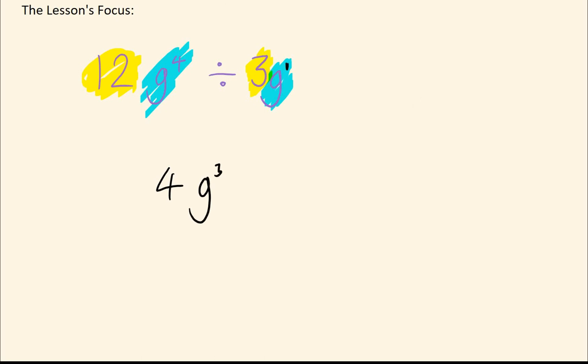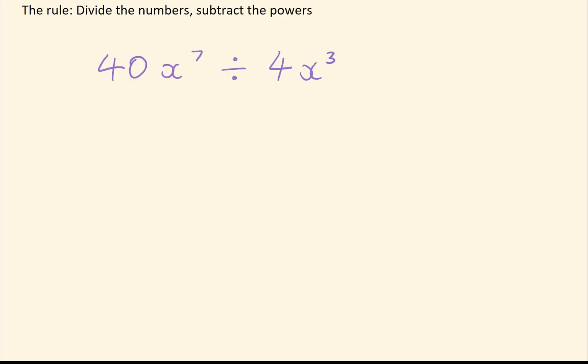So from that, you can see the key rule for division. You want to divide the numbers, and then subtract the powers. So 40 divided by 4 would give us 10. 7 take away 3 would give us 4. So it would be 10x to the power of 4.